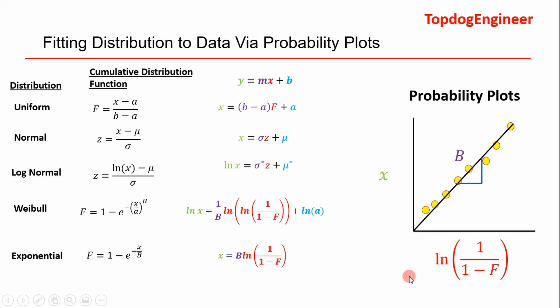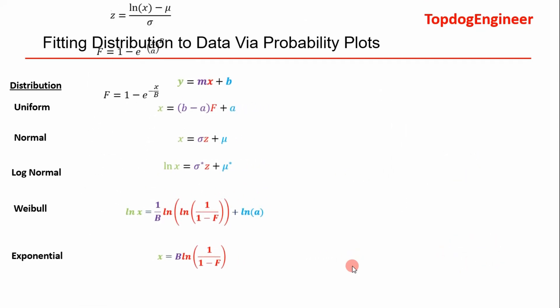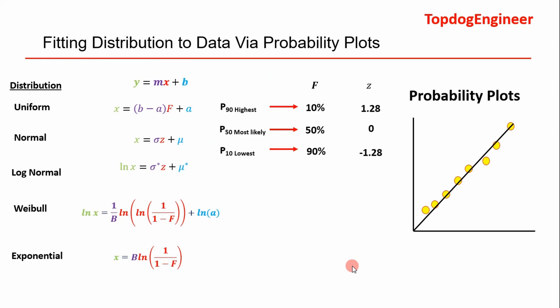You've got to fit it through the origin and then b is going to be our slope. But we have x versus the natural log of 1 over 1 minus F, and we've done it. That's essentially how that works. I suggest if you don't understand it, go through this, but once we've compared everything on the same playing field, we can go ahead and determine our P90, P50, and P10.